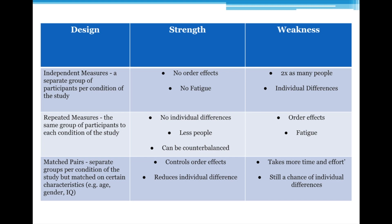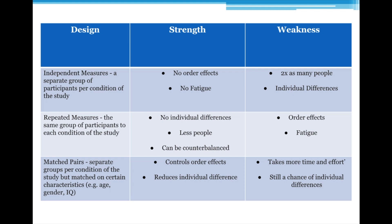So you've got all participants being used in each condition of the study. Finally, you've got a matched pairs design — that's almost in the middle of the two. It's where you've got separate conditions, but you try to match those participants in those conditions on certain key characteristics. And that becomes clear when we start looking at the strengths and weaknesses.